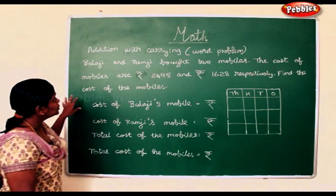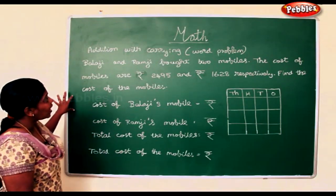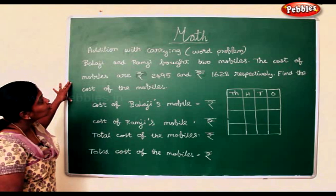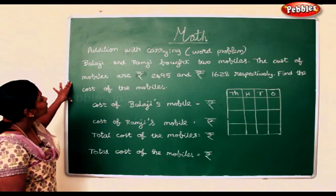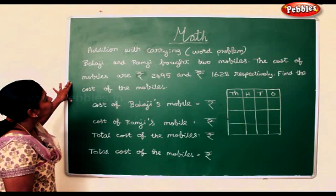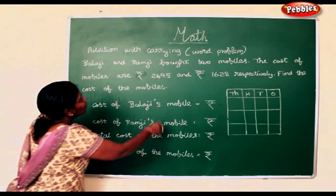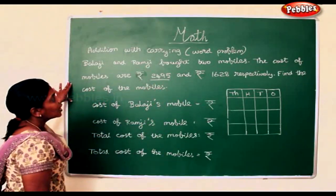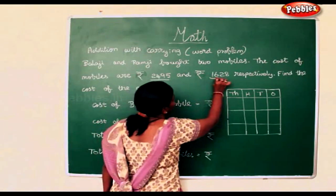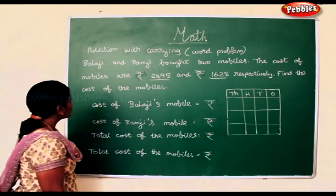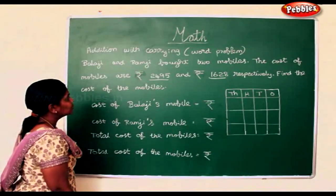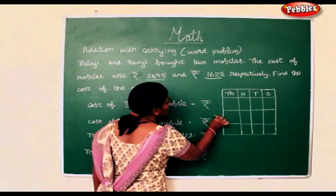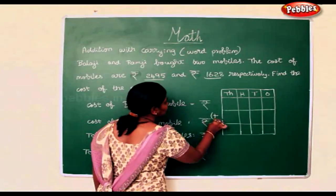Now we shall see addition with carrying. Balaji and Ramji bought two mobiles. The cost of mobiles are rupees 2495 and rupees 1628 respectively. Find the cost of the mobiles, which means you have to find the total cost. So for total, we use addition.